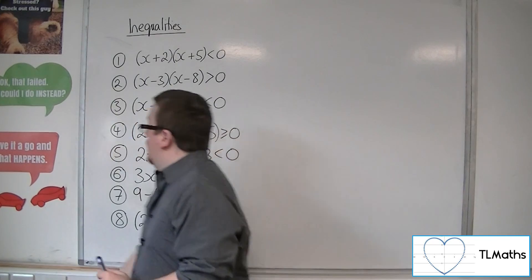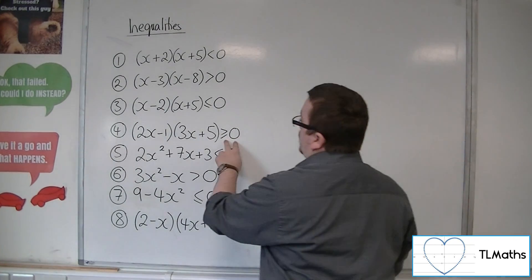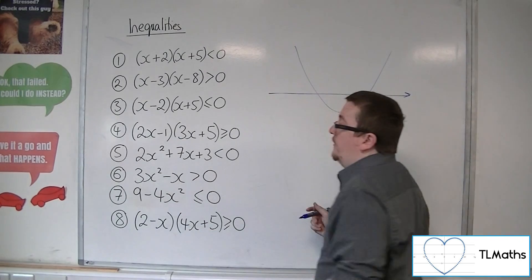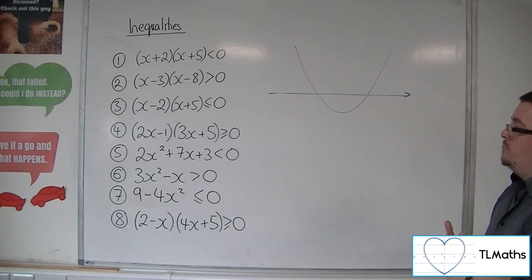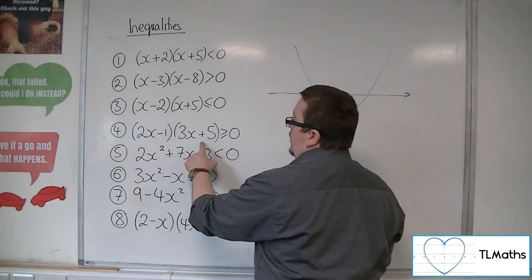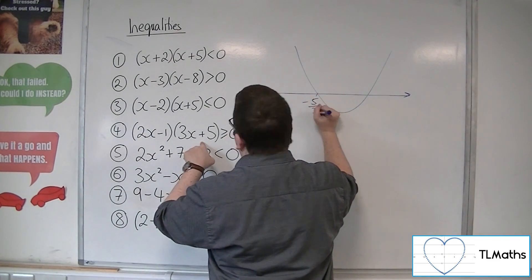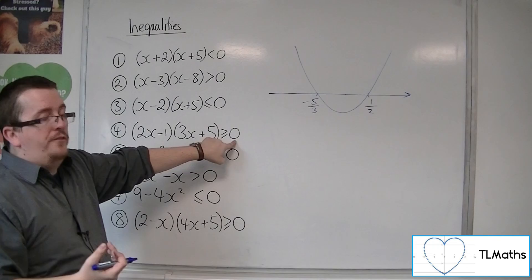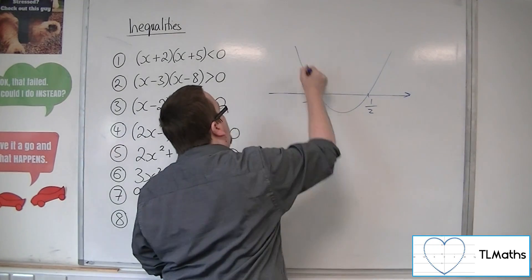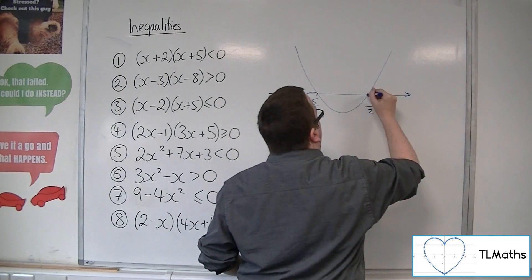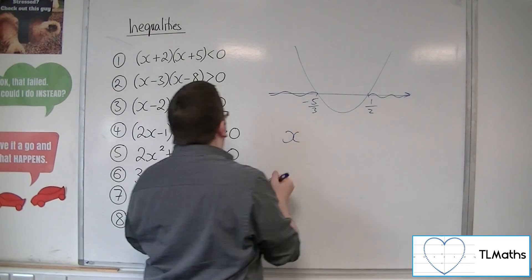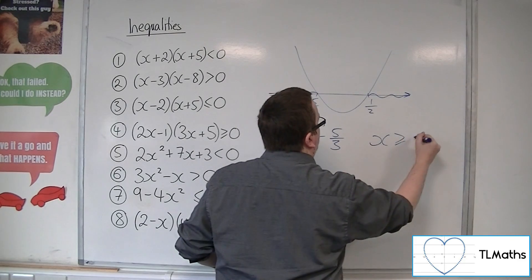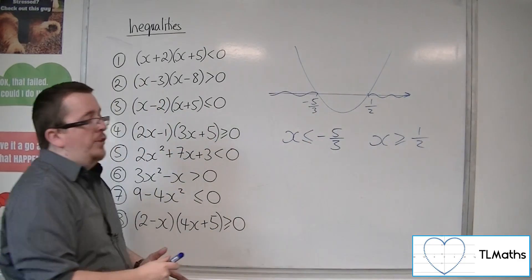Number 4: (2x−1)(3x+5) ≥ 0. Go straight in with the sketch. We'll have a positive parabola because expanding gives a positive 6x². We're crossing at −5/3 and 1/2. Where is the parabola above the x-axis? It's above it here and here. Because we've got the equal sign, the solution is x ≤ −5/3 and x ≥ 1/2. Two regions, two inequalities.